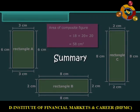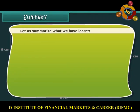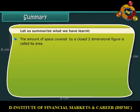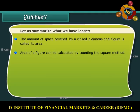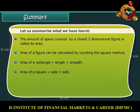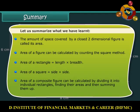Let us summarize what we have learned. The amount of space covered by a closed two-dimensional figure is called its area. Area of a figure can be calculated by the counting the squares method. Area of a rectangle equals length multiplied by breadth. Area of a square equals side multiplied by side. Area of a composite figure can be calculated by dividing it into individual rectangles, finding their areas, and then summing them up.